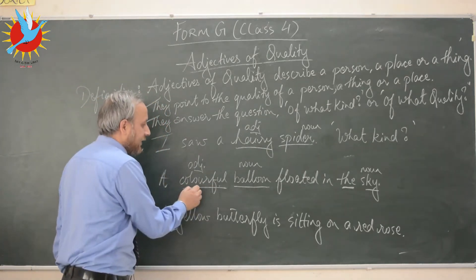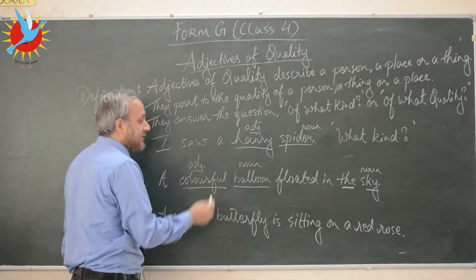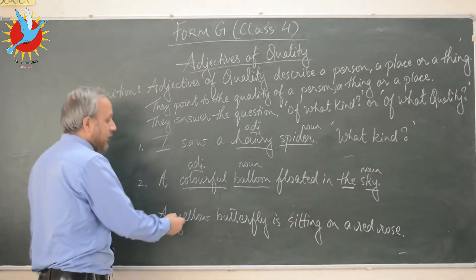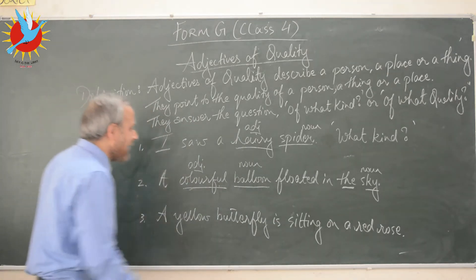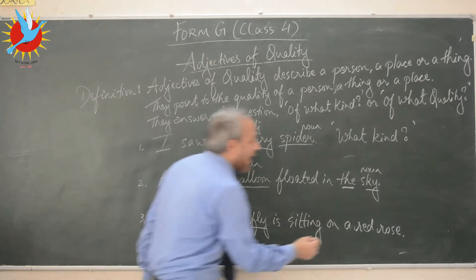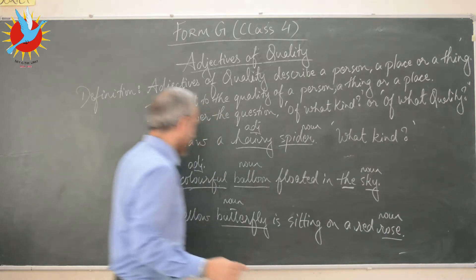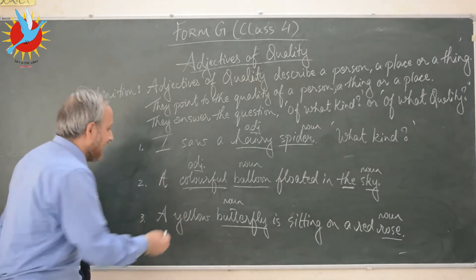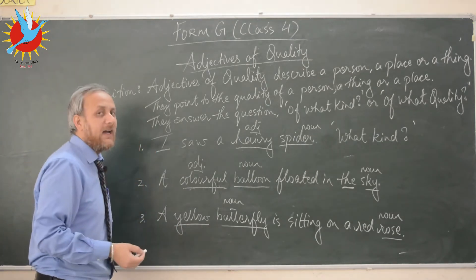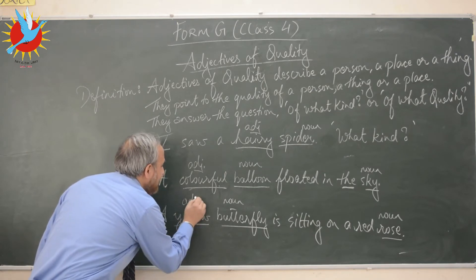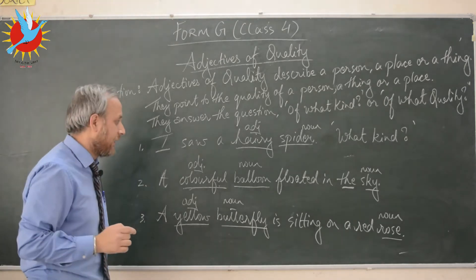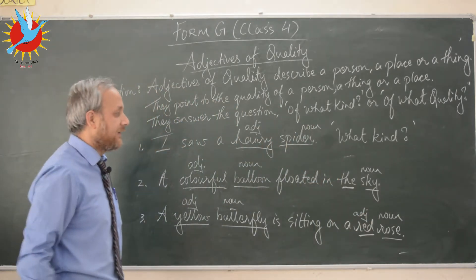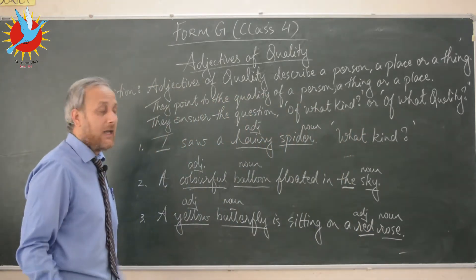'Colorful' is a descriptive adjective because it tells us what kind of balloon floated in the sky. The adjective is performing its function — giving us more information about the noun 'balloon.' Likewise, 'hairy' gives us more information about the noun 'spider.' Now look at the third sentence: 'A yellow butterfly is sitting on a red rose.' Here 'butterfly' and 'rose' are both nouns.